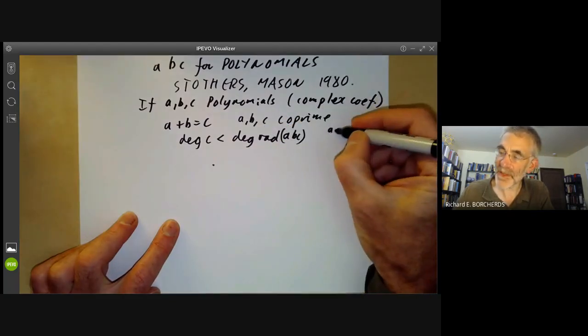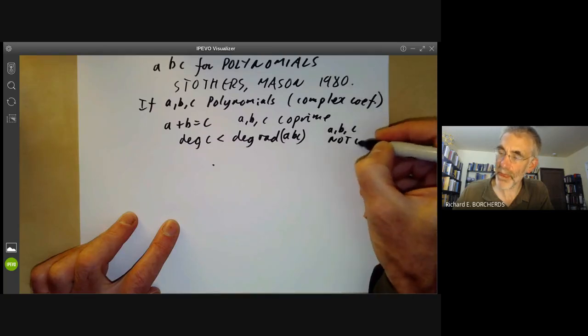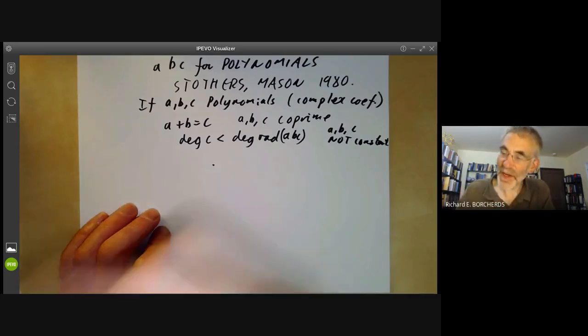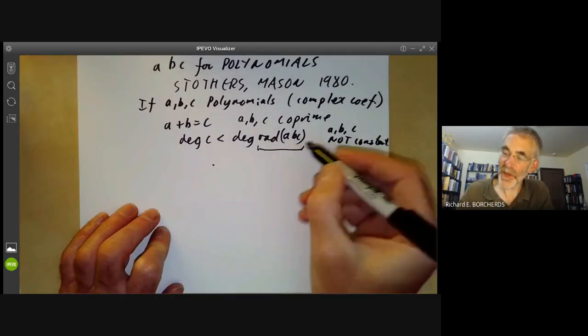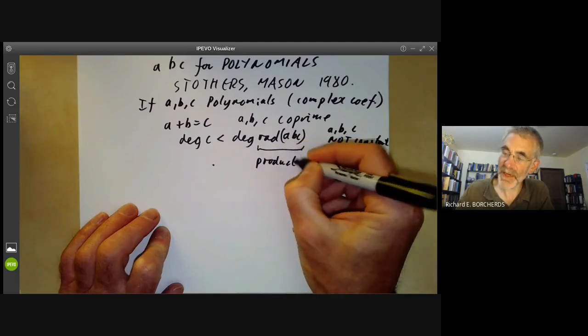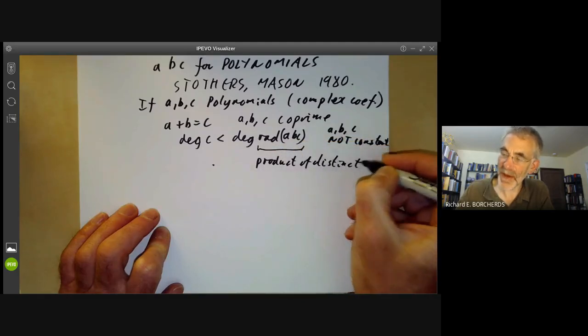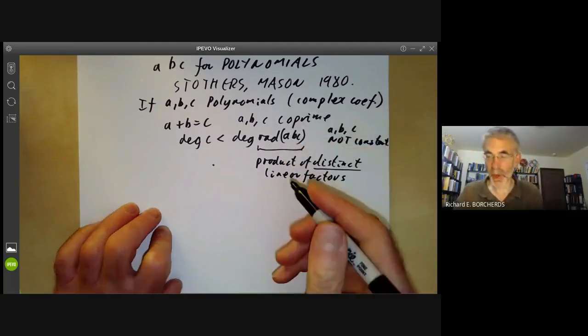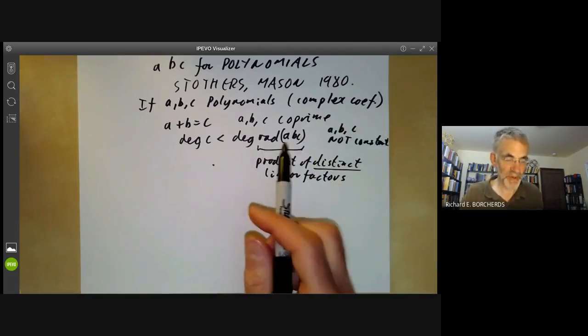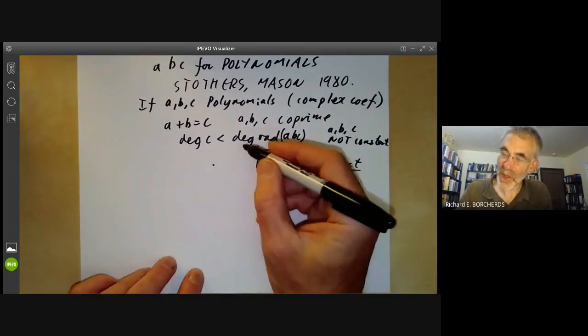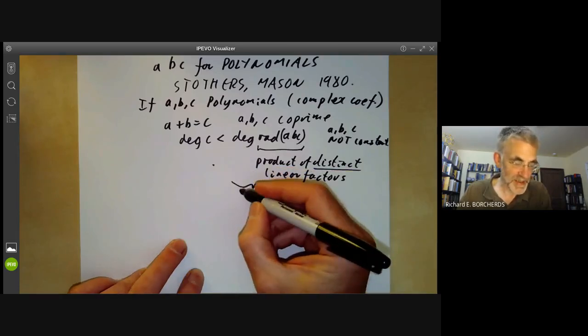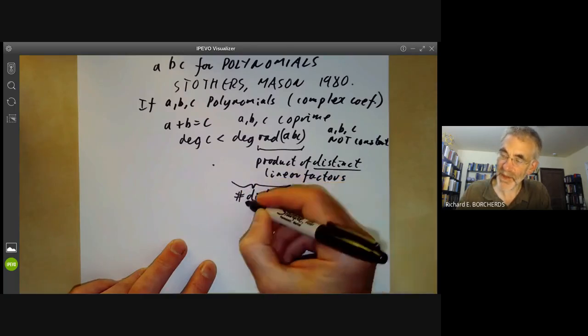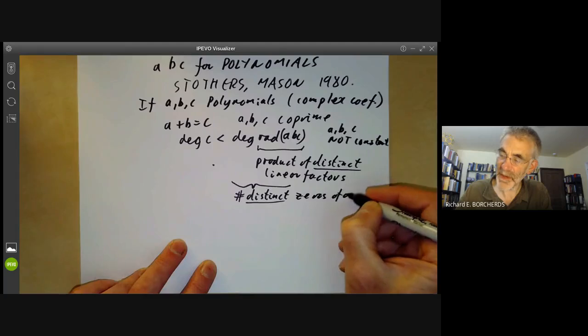Here we assume that A, B, C are not constants. So what's the radical of A, B, C? Well, it's the product of the distinct linear factors since we're working over the complex numbers. If you're not working over the complex numbers, the statement has to be modified very slightly. So the degree of the radical in this case is the number of distinct zeros of A, B, and C.